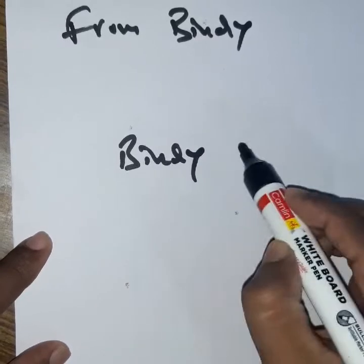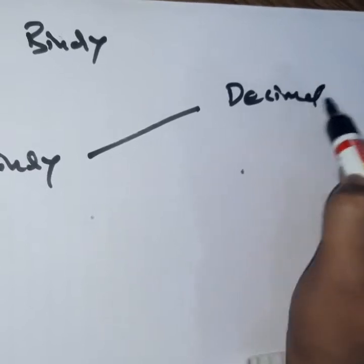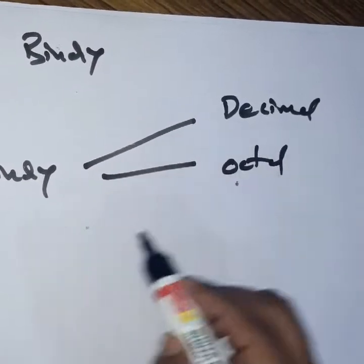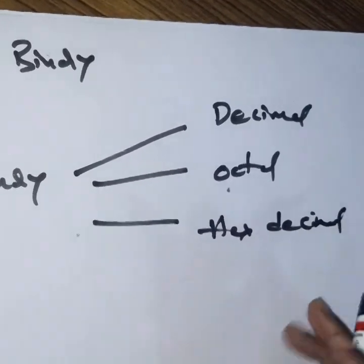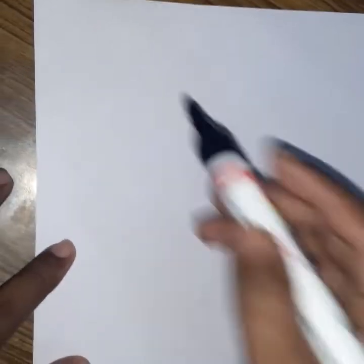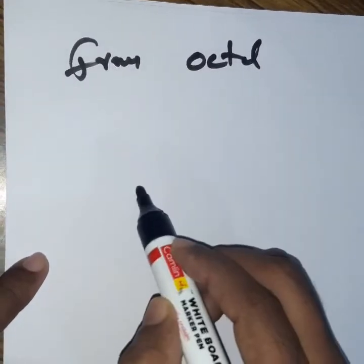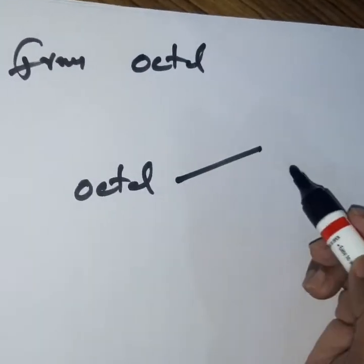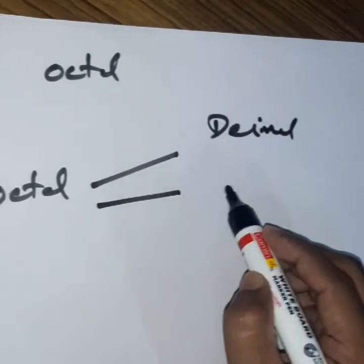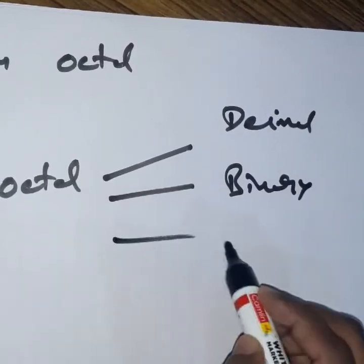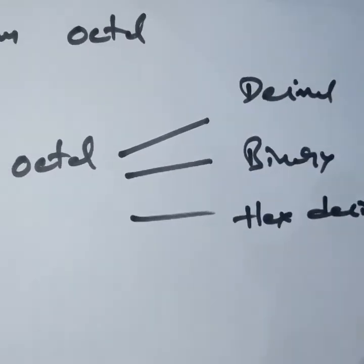We can also convert from binary — taking any binary number and converting it into decimal, octal, or hexadecimal. Similarly, we take an octal number and convert it into decimal, binary, or hexadecimal.